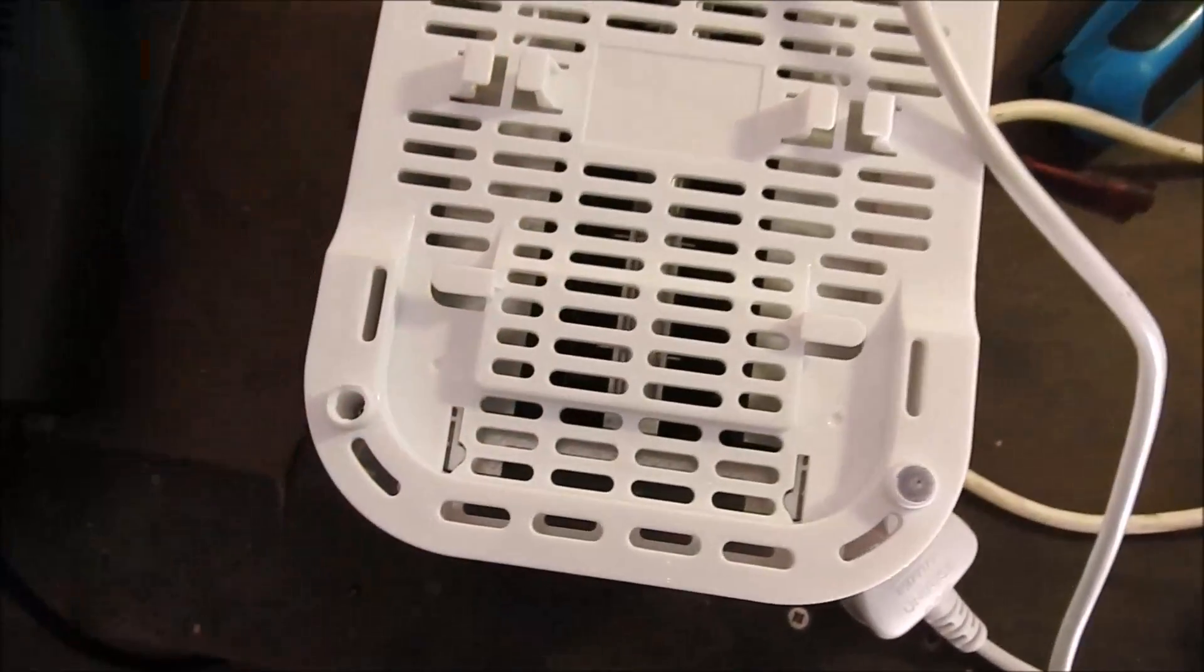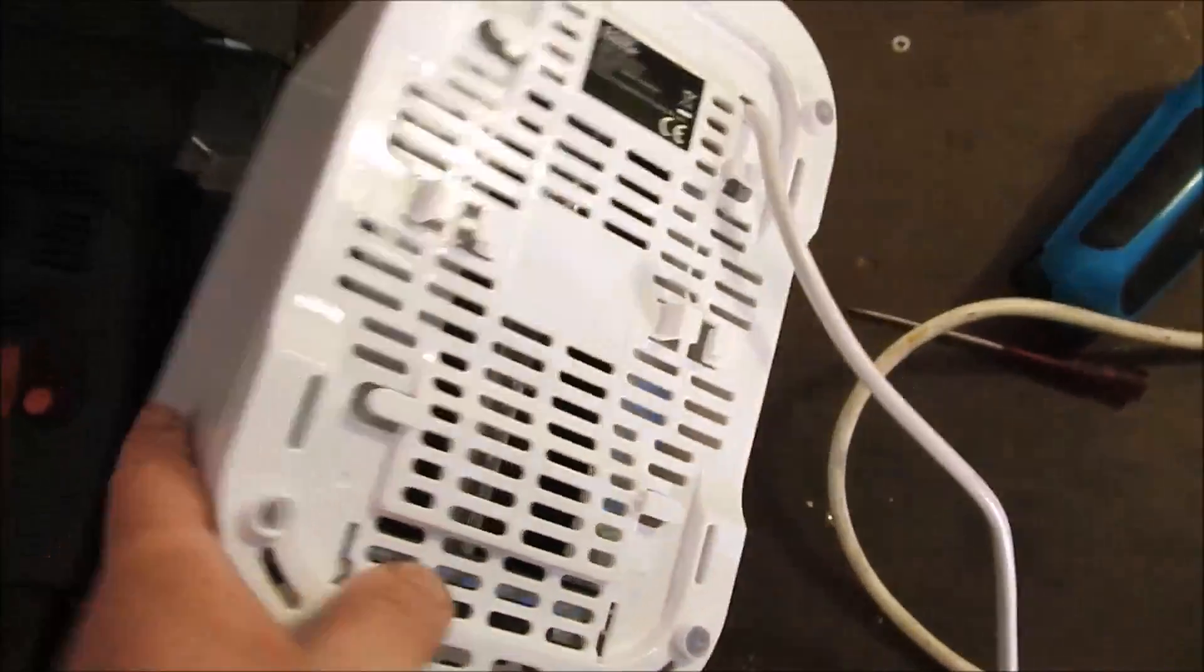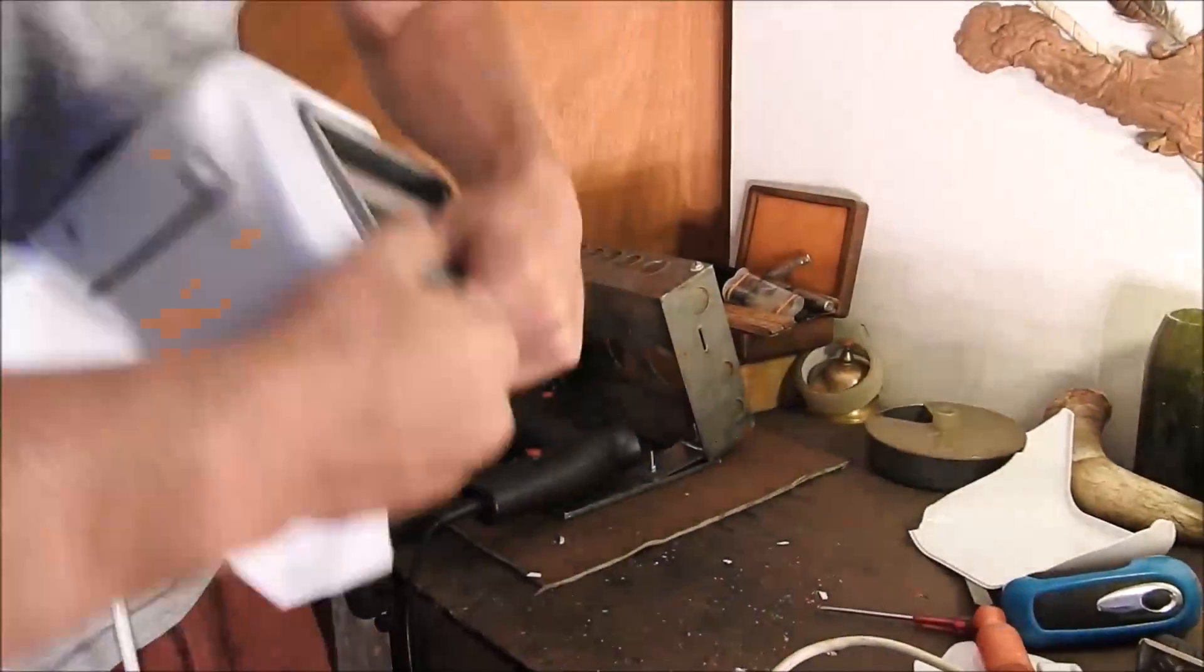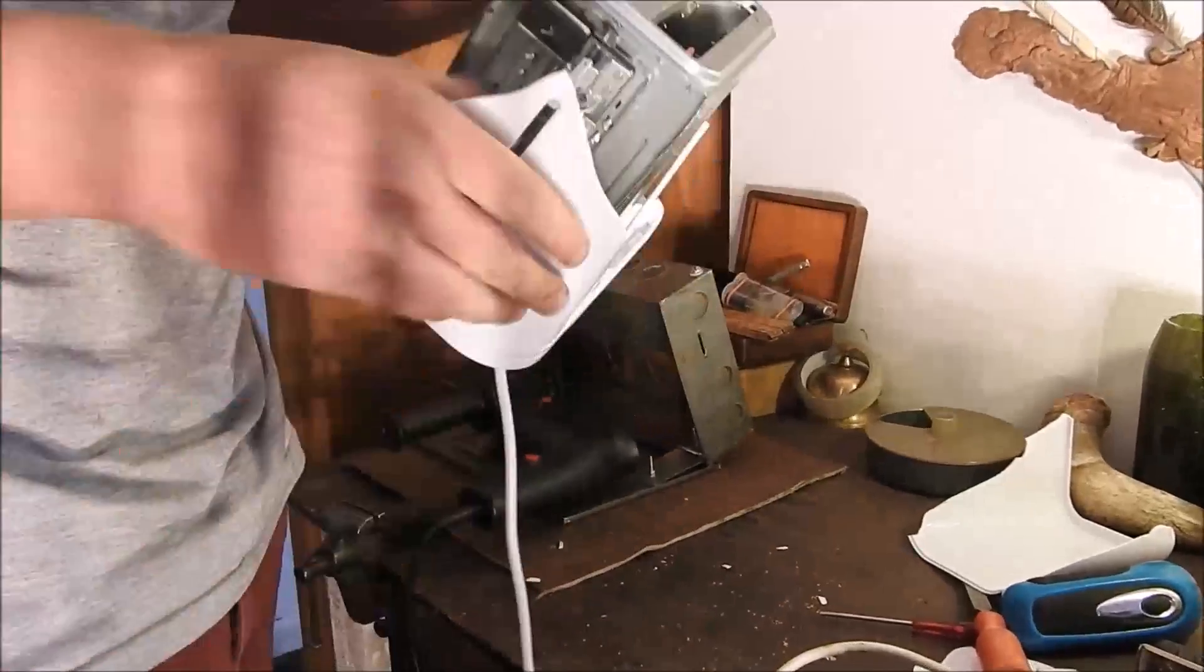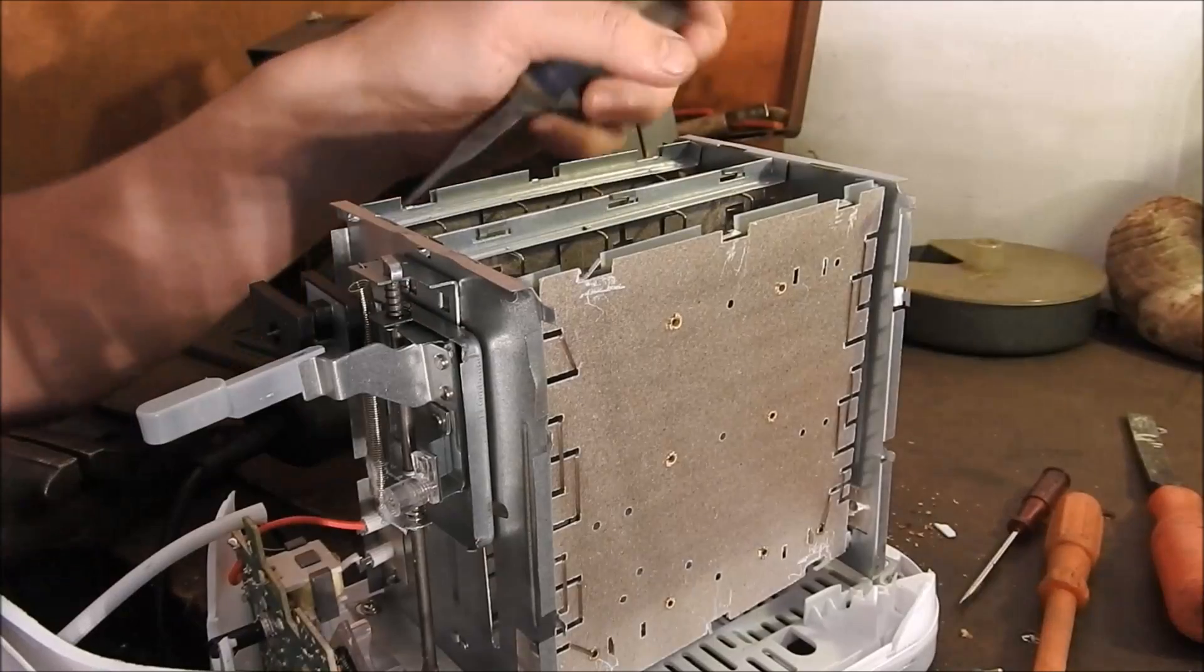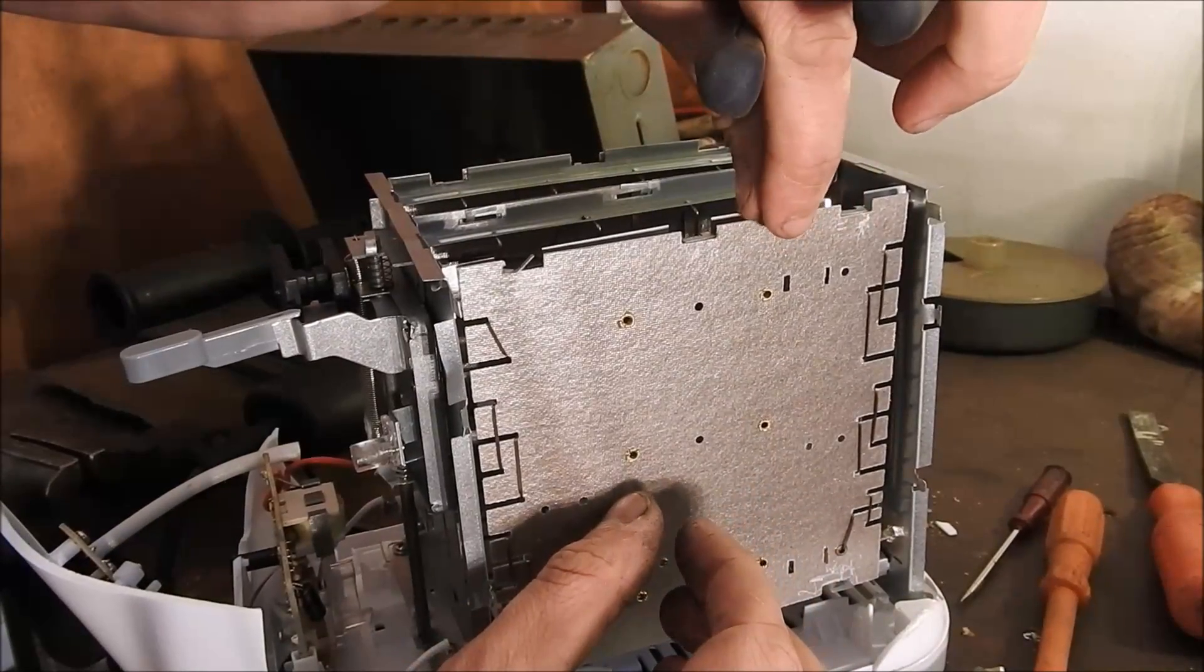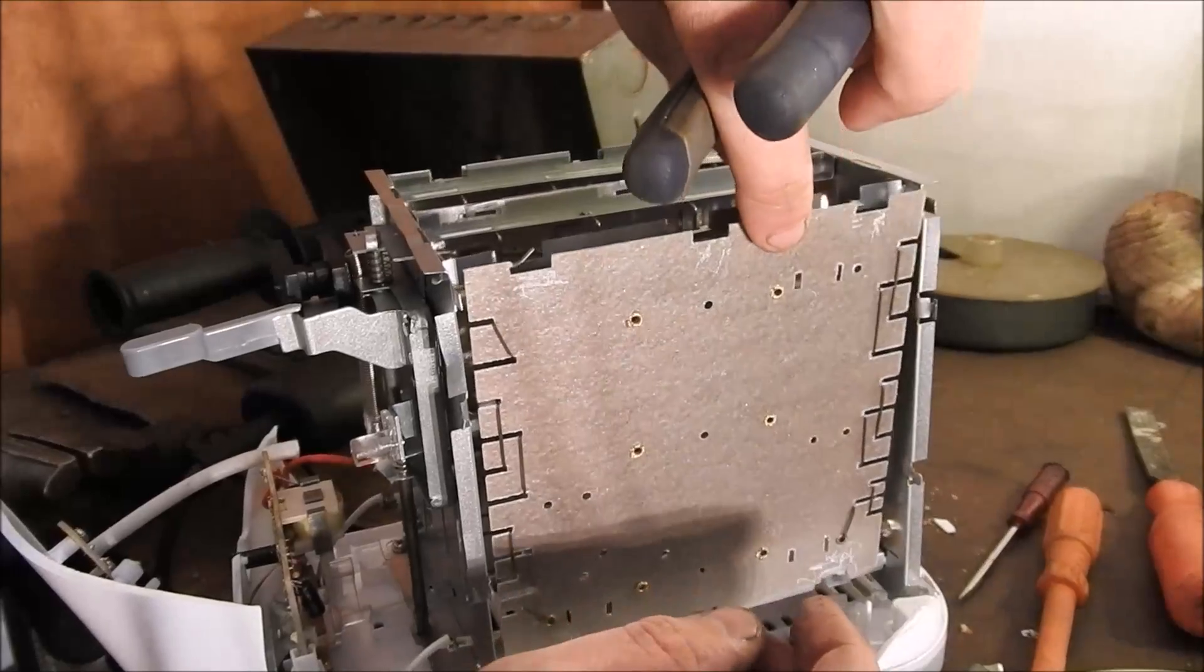So we're going to just take this apart. Unfortunately there are star screws in here so we're just going to have to use some brute force. Now we have the innards exposed. It's just a matter of bending back the holding clips and pulling out these cards which hold the filaments.